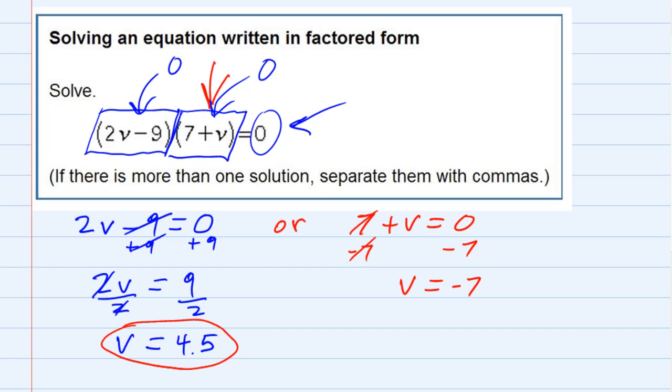So I have two possibilities. Either the v is 4.5, that makes the first term zero, or the v is minus 7, that makes the second term zero. And whenever I'm putting this in, it says if I have more than one solution, I should separate them with commas. So I would say that my answer is negative 7 comma 4.5.